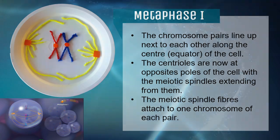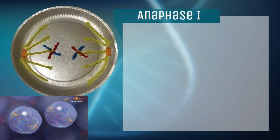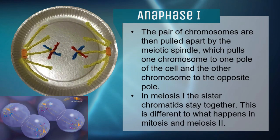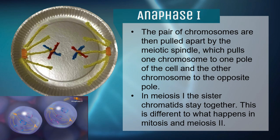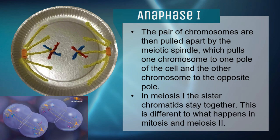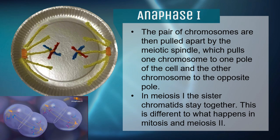Then we head on to Anaphase I. This model that we have made may be useful to easily visualize what happens in this stage. In Anaphase I, the pair of chromosomes are pulled apart from each other by the meiotic spindle. The chromosome pairs are now separated, each pole having the different chromosomes. Unlike mitosis and Meiosis II, the sister chromatids stay together.